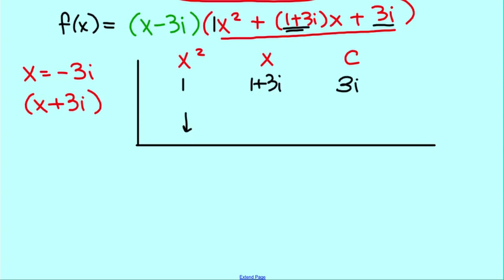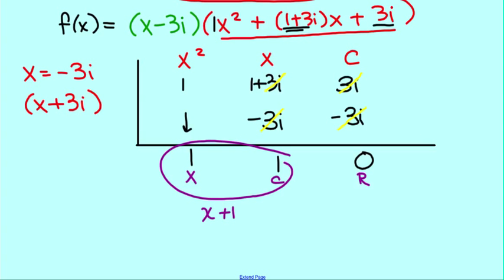So we bring down the 1. 1 times negative 3i is negative 3i. Add the columns together. Negative 3i and 3i cancel. So we're left with 1. 1 times negative 3i is negative 3i. Add them. They cancel. So you're left with 0. So you've now shown that that is also a zero of the function, factoring out x plus 3i. So I drop a degree again. So this is my x term, my constant, my remainder. So as a factor, what we're left with is x plus 1.